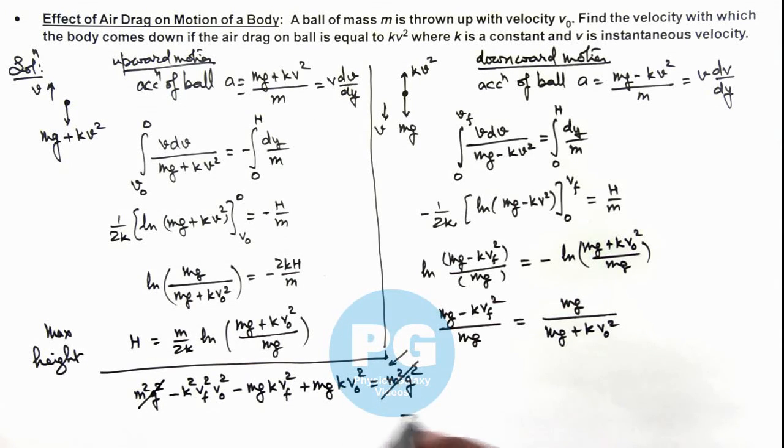As I am leaving it for you as an exercise to simplify this result, this is v₀ divided by root of (1 plus kv₀² by mg). That is the final result of the problem, the speed with which the ball will come to the ground.